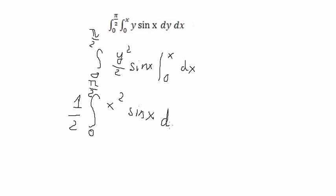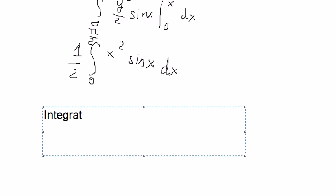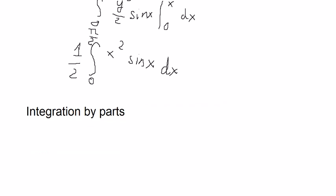Next we need to use integration by parts. So we have u and dv. u equals x squared, so you get du equals 2x dx.